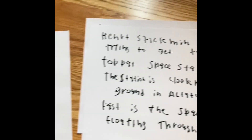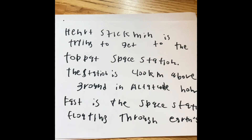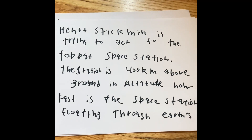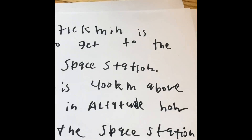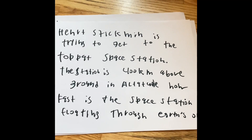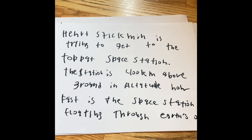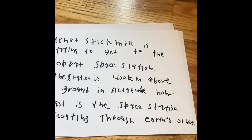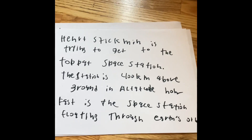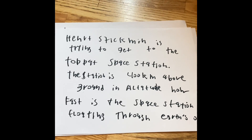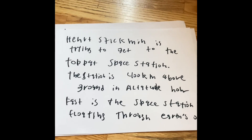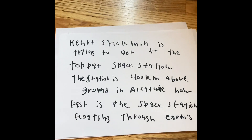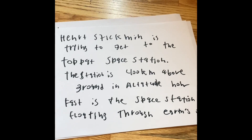Henry Stickmin is trying to get to the top of a space station. The station is 400 kilometers above the ground in altitude. How fast is the space station floating through Earth's orbit? We're going to find how fast that space station goes around Earth in meters per second.